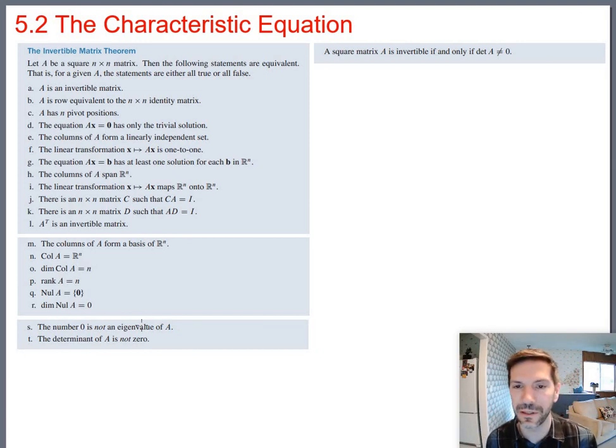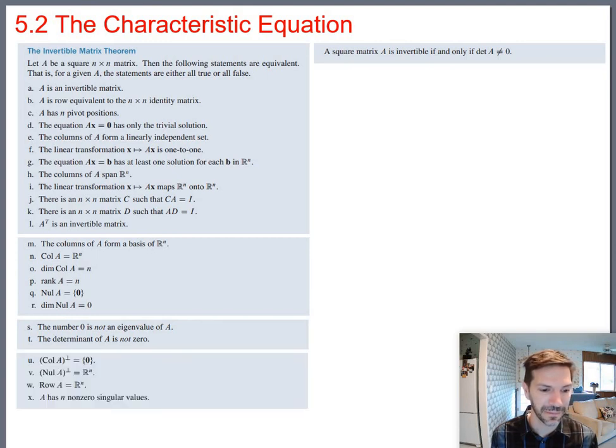It's too bad, by the way, that we don't get into chapter seven, where we could actually finish out the invertible matrix theorem, because we're not done yet. A through T is not enough. We also have, if you get into spectral decomposition, U and V and W and X. A through X is the full invertible matrix theorem. But you'll have to save spectral decomp for your next linear algebra course. You usually get to that in a second linear algebra class. So, I think you are ready to tackle the homework. And I will see you in section 5.3.